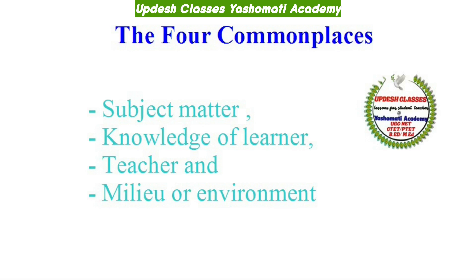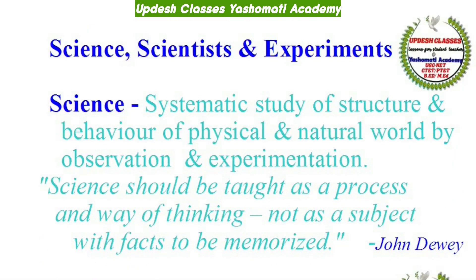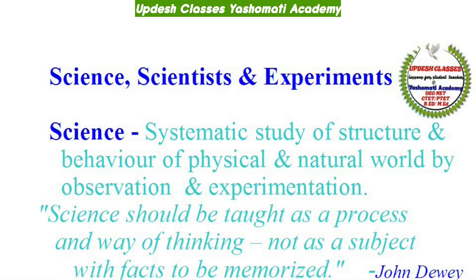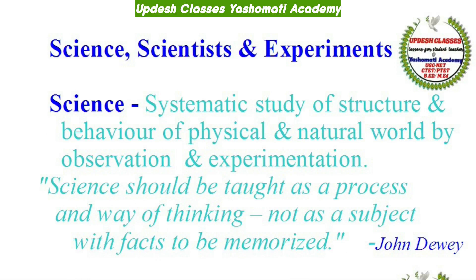तो माना गया कि ये सारे components — subject matter, learner, teacher — education को impact करते हैं, और क्योंकि यह काम किसी environment में हो रहा है, इसलिए environment teaching process को impact करता है और teaching process का environment पर भी impact पड़ता है। ये चार common places Schwab ने define कीं। अब जानते हैं science, scientist और experiments जैसी common terms के बारे में। आम तौर पर लोग science का मतलब physics, chemistry, biology जैसे subjects मानते हैं।